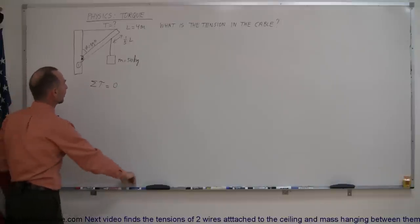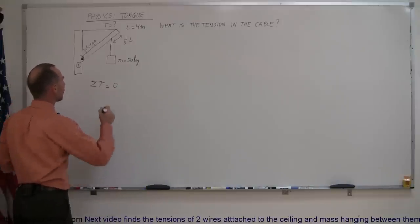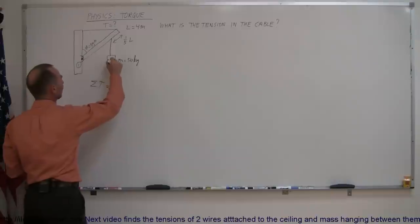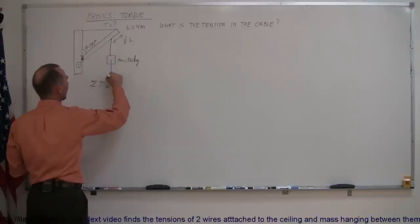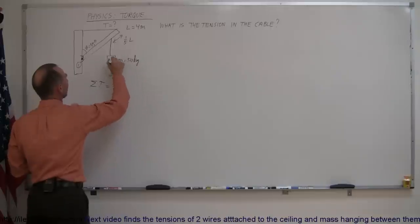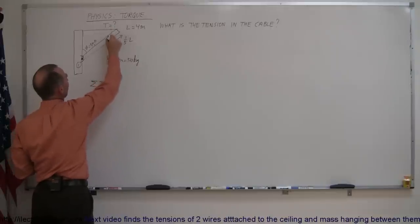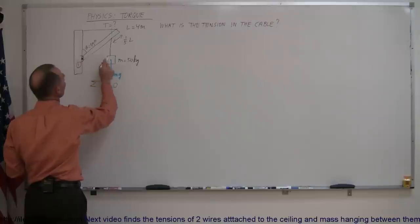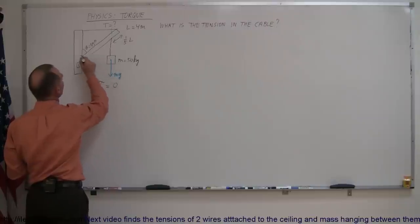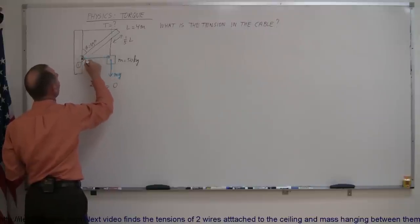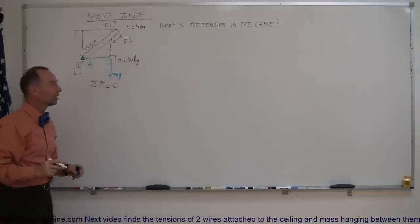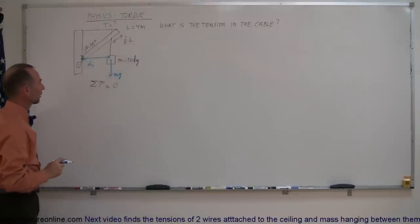Let's identify the forces. First of all, we have the weight of this mass hanging from the beam — we'll call that mg. If this is the line of action of that force, the distance from the pivot point to there is this distance right here, which would be considered the distance associated with that force causing that torque.